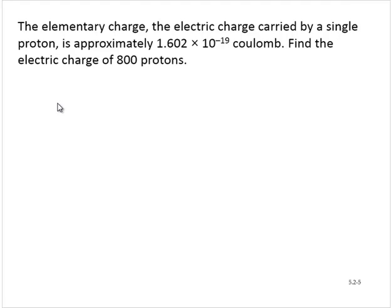So we will need to multiply the elementary charge by 800. This would give us 800 times 1.602 times 10 to the negative 19th.